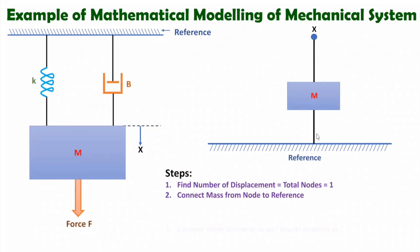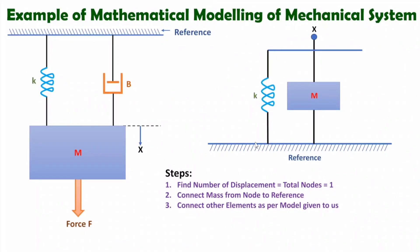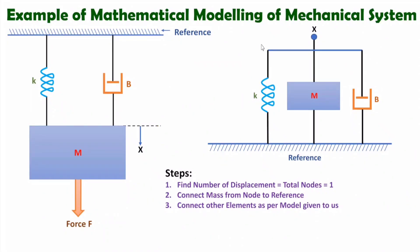In the next step, we connect all other elements as per the given model. Here we have two elements: one spring and one damper. The spring k is connected between the reference and node x, so we connect spring k from the node to the reference. Similarly, the damper is connected between the reference and node x, so we connect the damper between node x and the reference.